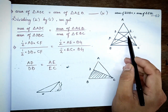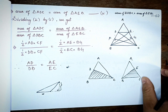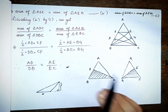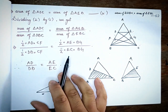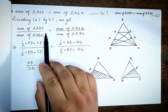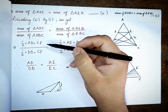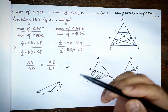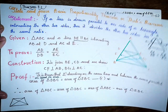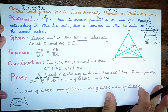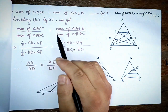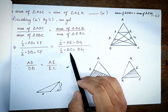Dividing Equation 2 by Equation 1, the CF and BG cancel out, giving us the result. Therefore AD divided by DB equals AE divided by EC.